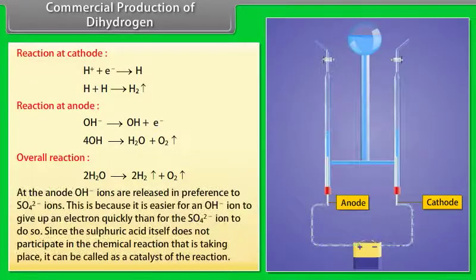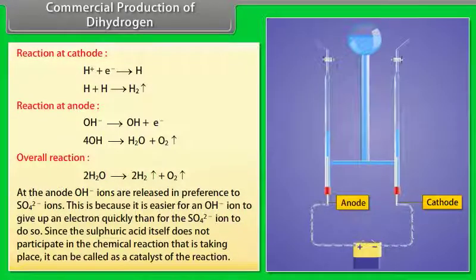At the anode, OH- ions are released in preference to SO4 2- ions. This is because it is easier for an OH- ion to give up an electron quickly than for the SO4 2- ion to do so. Since the sulphuric acid itself does not participate in the chemical reaction that is taking place, it can be called as a catalyst of the reaction.